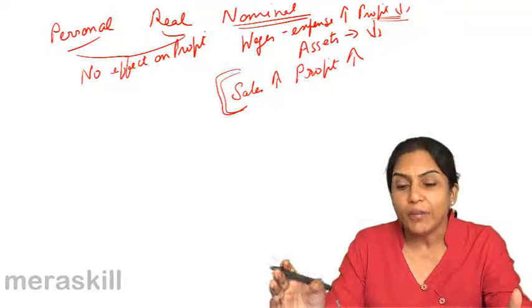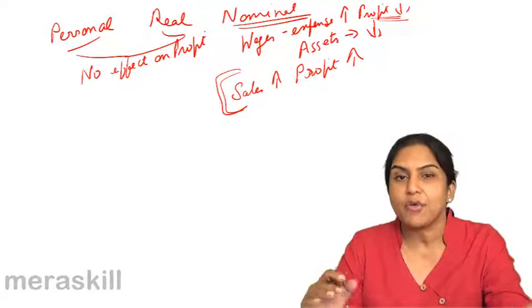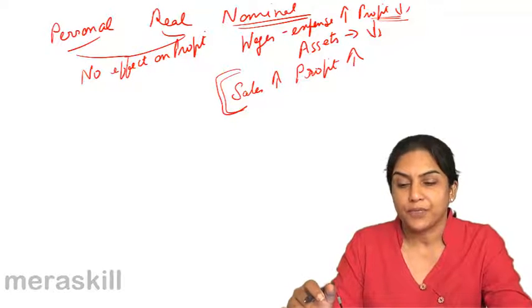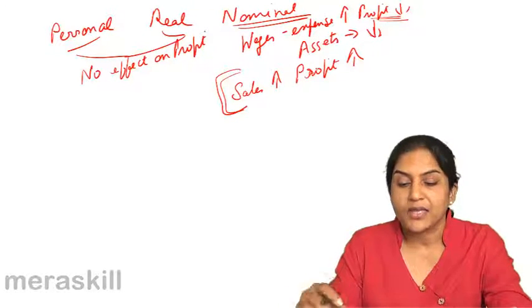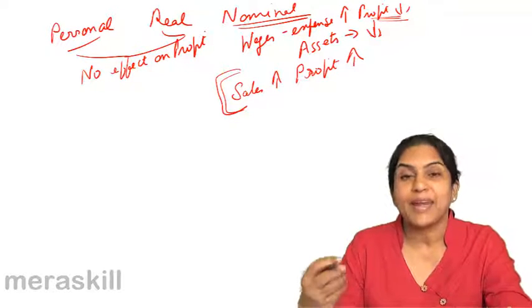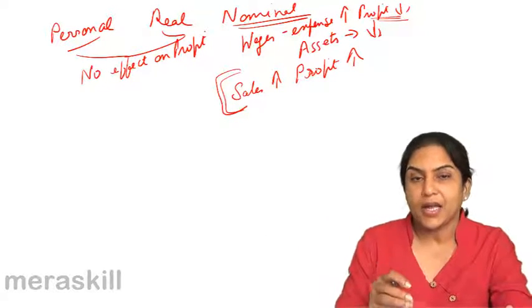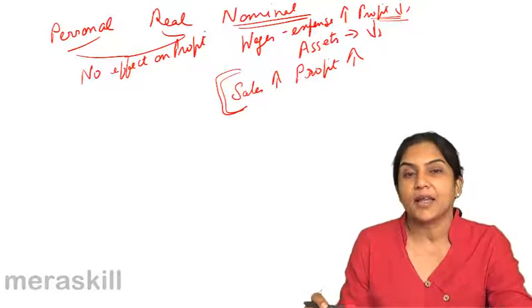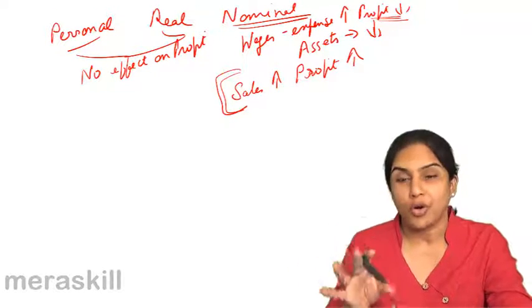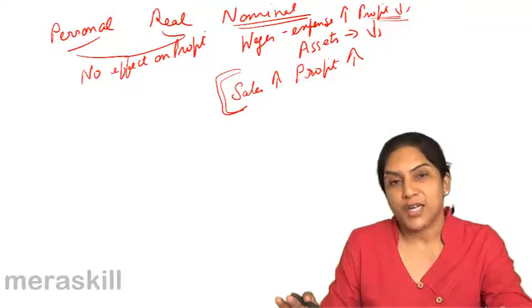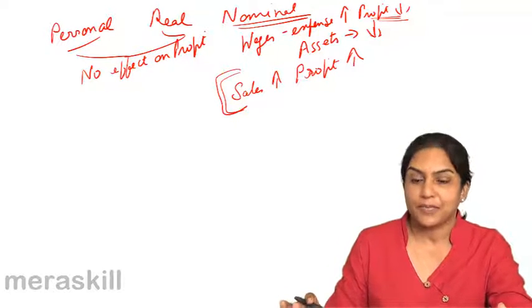So whenever any nominal account, any income or expense account is affected due to error, we've made an error by debiting or crediting any nominal account wrongly, the profits for that year would be affected.